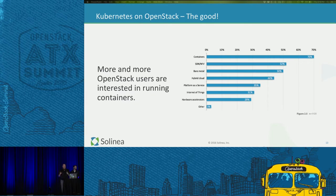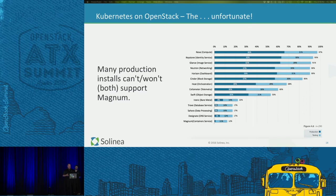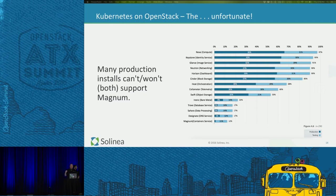The good news is that a lot of people are looking at containers and want Kubernetes as their orchestration management platform. The unfortunate part is that our clients are running Icehouse or Kilo — definitely not Liberty — and they either can't, won't, or both support Magnum. Looking at the latest survey numbers, you see Magnum on the bottom as far as production installs. If you have an existing large enterprise OpenStack installation, there's not a lot of likelihood you can use Magnum.